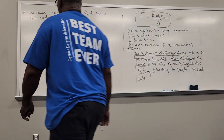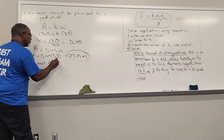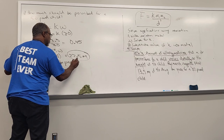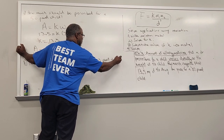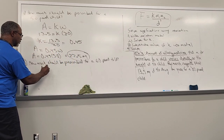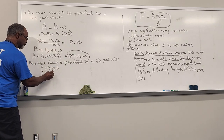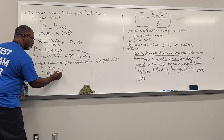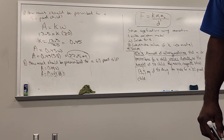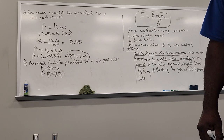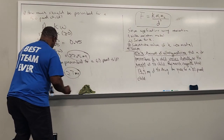Part b asks how much should be prescribed for a 60-pound child. Now that we have our model A equals 0.45W, we just put 60 in for W. Multiply 0.45 times 60 and you get 27. So it takes 27 milligrams for a 60-pound child.